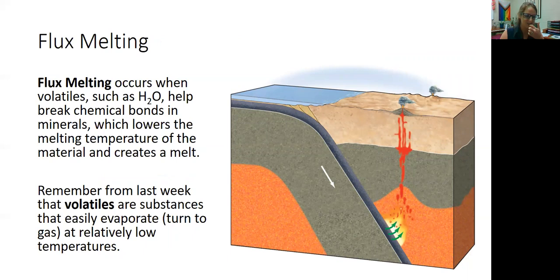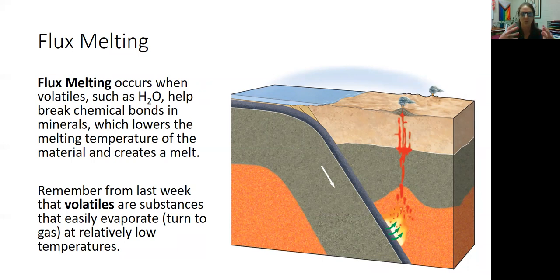Flux melting occurs when volatiles — like water — are introduced. Volatiles melt at a low temperature and help break chemical bonds within minerals. Chemical bonds that would normally keep material solid can break when a volatile like water is introduced and those water compounds start interacting with those bonds, allowing that rock to become a liquid and melt.